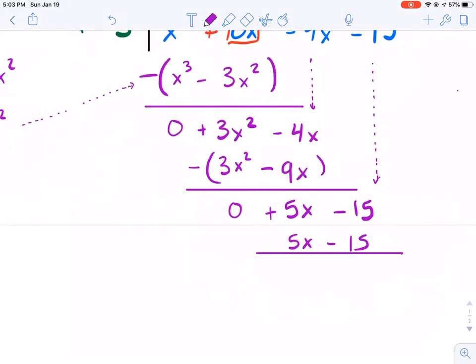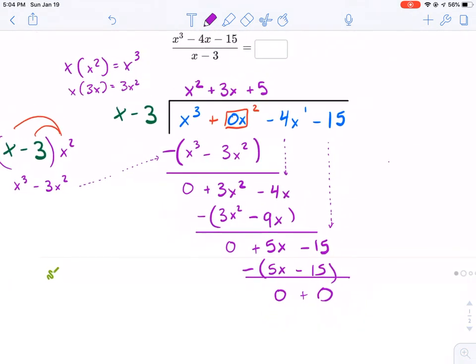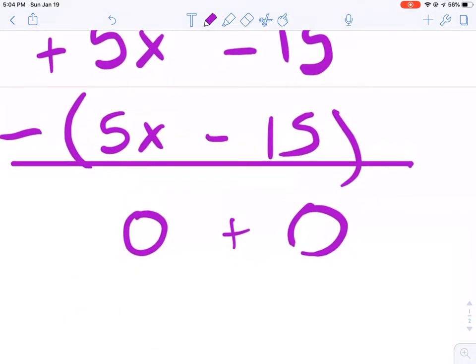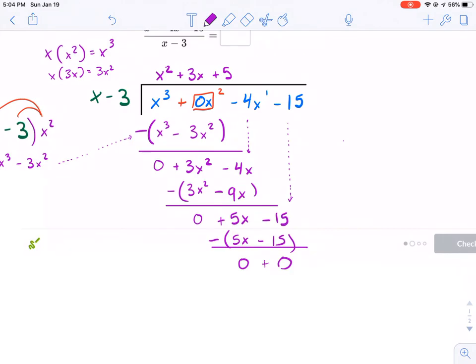Draw our line, subtract with parentheses - don't forget that every time. 5x minus 5x is zero - that's what we want every time. Negative 15 minus a negative 15 is negative 15 plus 15, which equals zero. In this case there's nothing left to drop down and we have nothing left. We have no remainder. This is the remainder, so our remainder is zero.